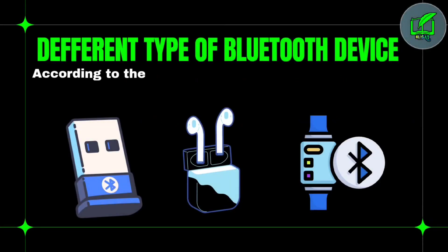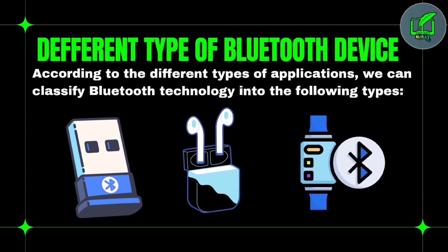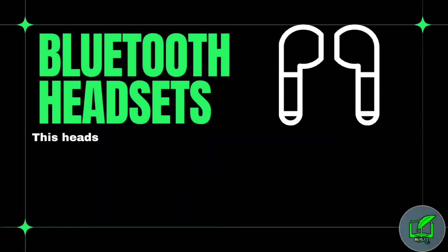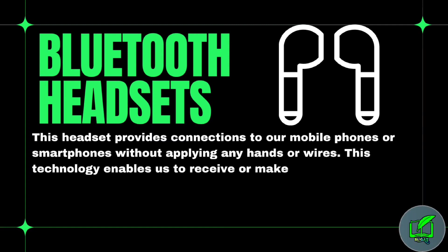Different types of Bluetooth devices: According to the different types of applications, we can classify Bluetooth technology into the following types. Bluetooth headset — this headset provides connection to your mobile phone or smartphone without applying any hands-free pairs. This technology enables us to receive or make a call with Bluetooth.